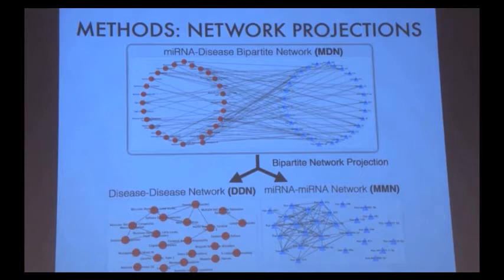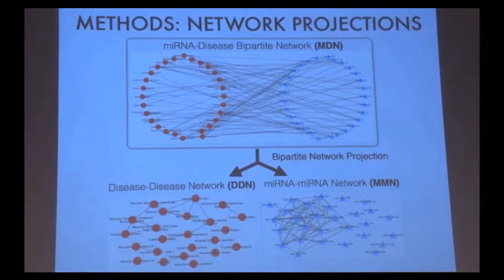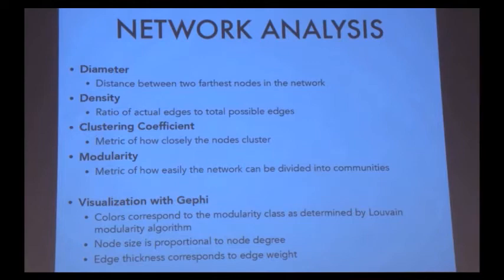In order to gain more insights from this micro-RNA-disease bipartite network, I created two projections. In the disease network projection, two diseases are connected if they are targeted by the same micro-RNA. In the micro-RNA projection, two micro-RNAs are connected if they both target the same disease. To further analyze these network projections, I looked at several metrics including diameter, density, clustering coefficient, and modularity. To visualize the networks, I used Gephi software.